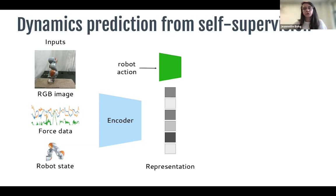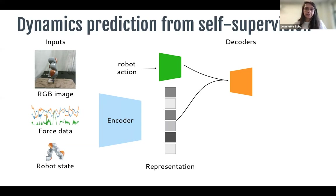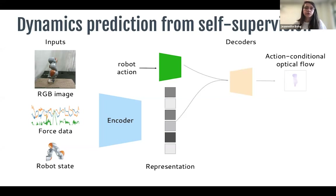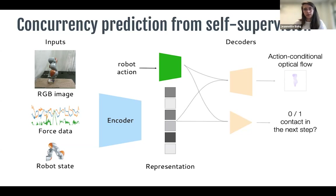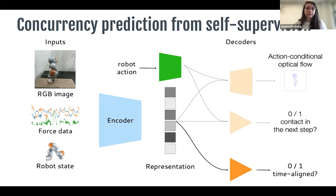Because we're learning control from this representation, we want it to capture task dynamics — how an action changes the state from one time step to the next. The first self-supervised objective is dynamics prediction in image space: given the sensory representation and robot action, we predict the action-conditional optical flow of the robot. The second objective predicts whether the robot will be in contact at the next time step.